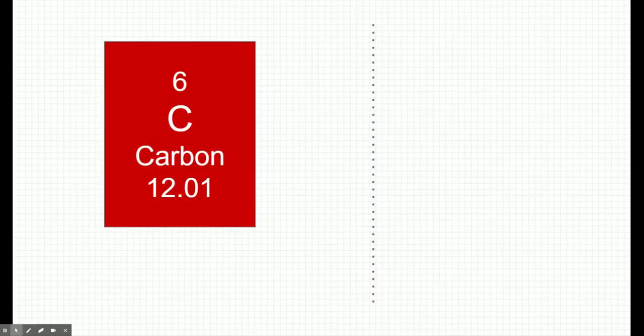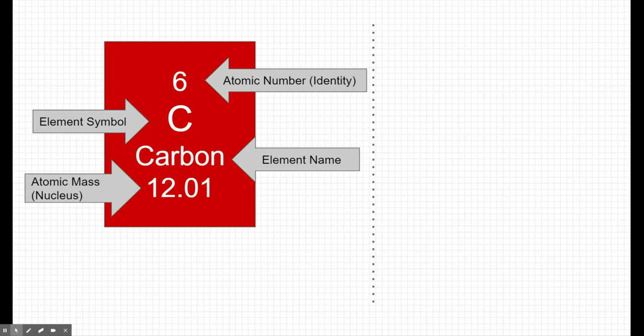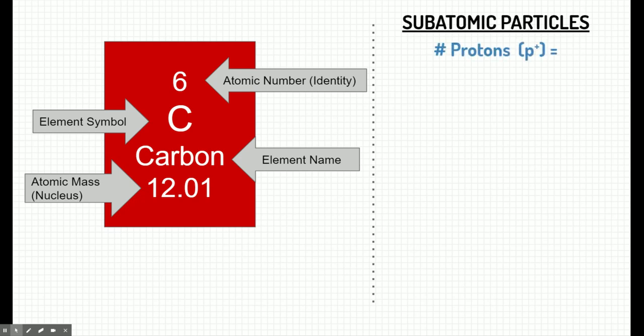Let's take a look at an example of one of the elements on the periodic table and extract the information from it — here's carbon. The labels are really important. One number you'll see on each element is the atomic number — that's the identity of the atom. You'll also see the element symbol and an element name such as carbon. You'll also see the atomic mass, which represents the mass of the nucleus. The number of protons is equal to the atomic number — the atomic number is an atom's identity, so the number of protons is always the atomic number.